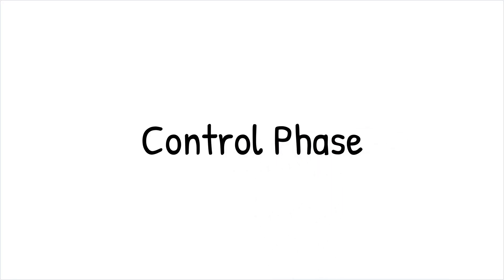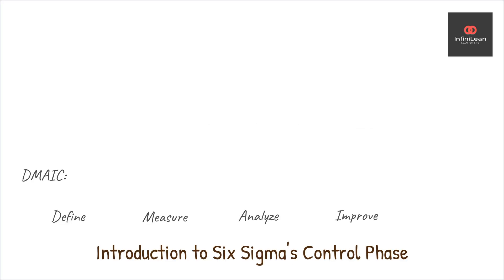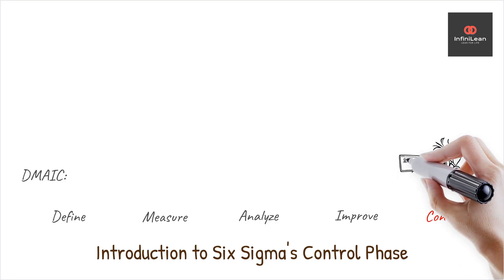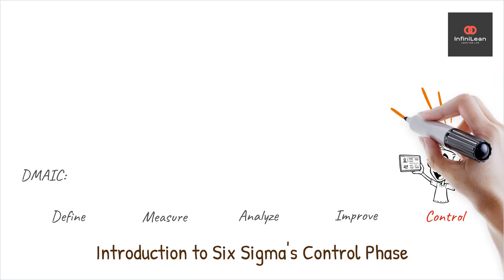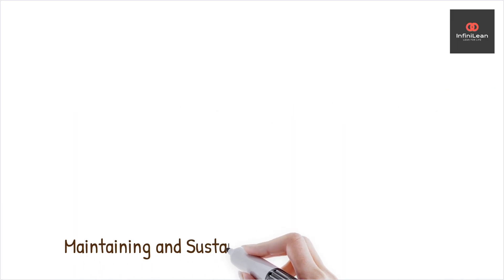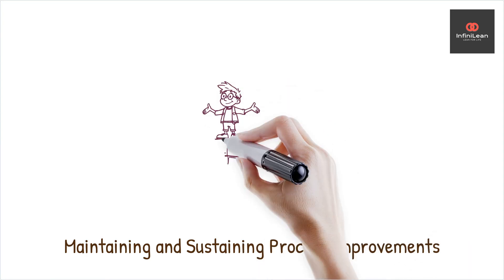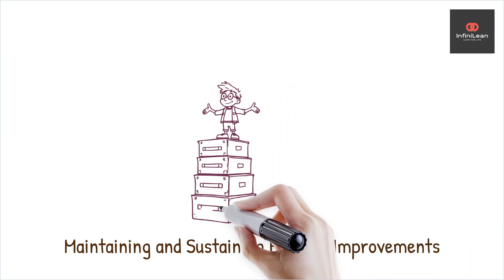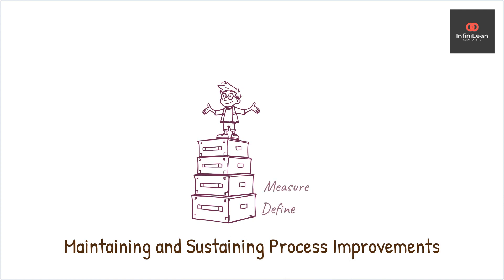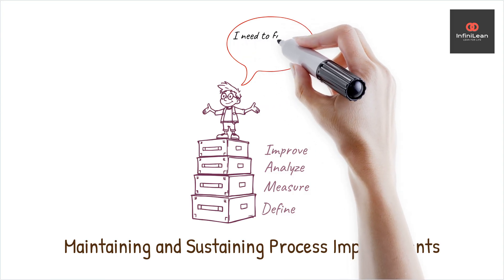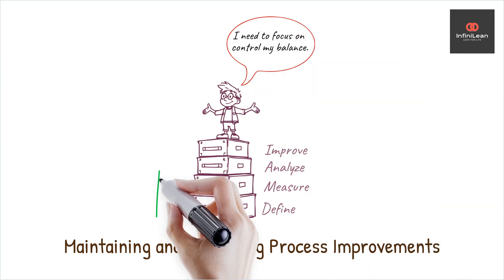Welcome to the Control Phase — the fifth step in the DMAIC process: define, measure, analyze, improve, and control — employed for process improvement. The Control Phase is about maintaining and sustaining the improvements achieved during the previous phases. It ensures that the enhanced processes continue to operate smoothly and consistently produce the desired results over the long term.